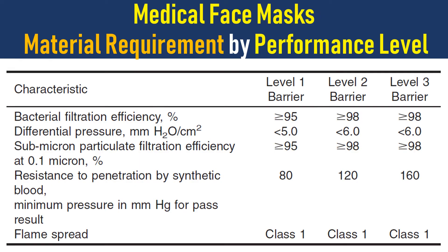Medical face mask material requirements by performance level. For different performance levels the requirements are different. For bacterial filtration efficiency, level one barrier requires not less than 95 percent. For level two it should be equal to or greater than 98 percent, and for level three protection it should also be equal to or greater than 98 percent.